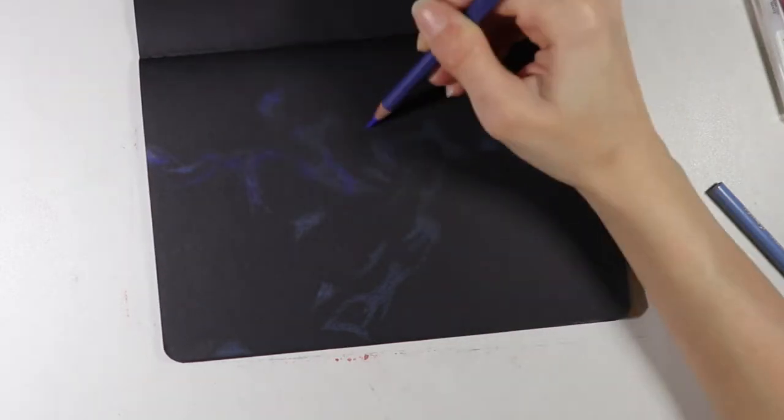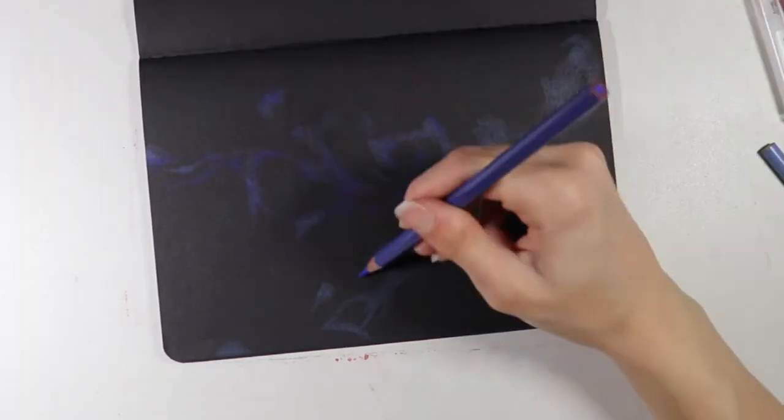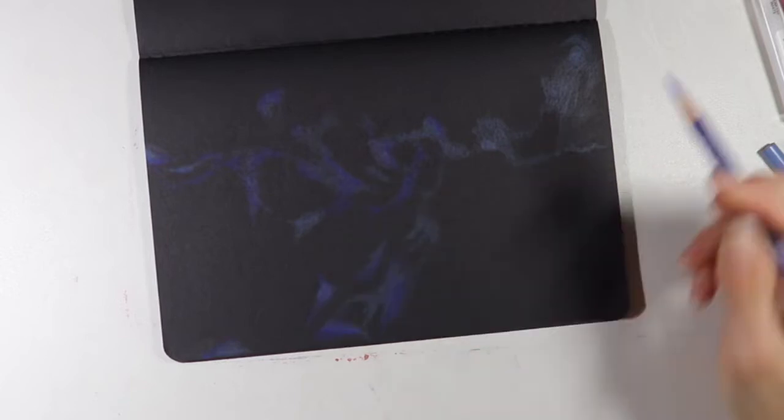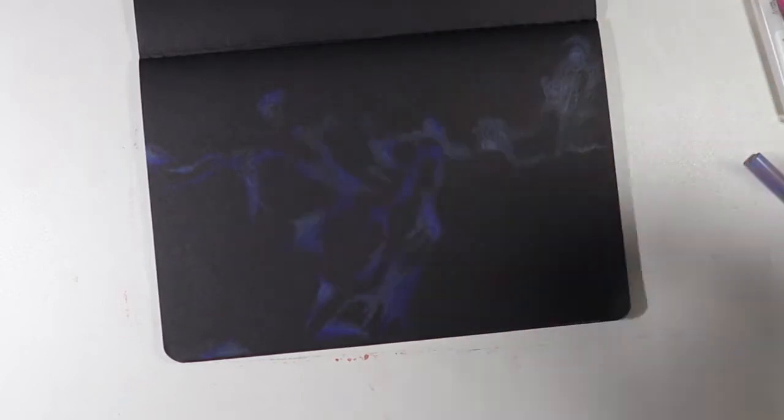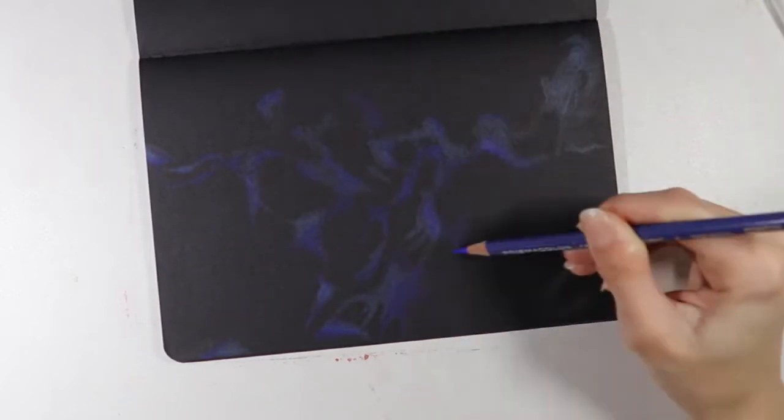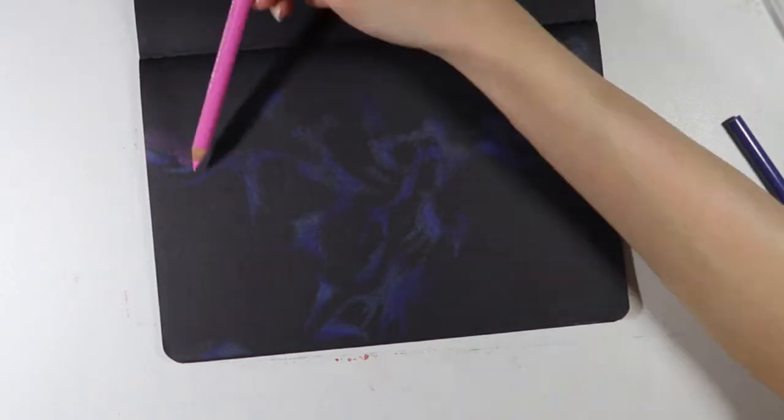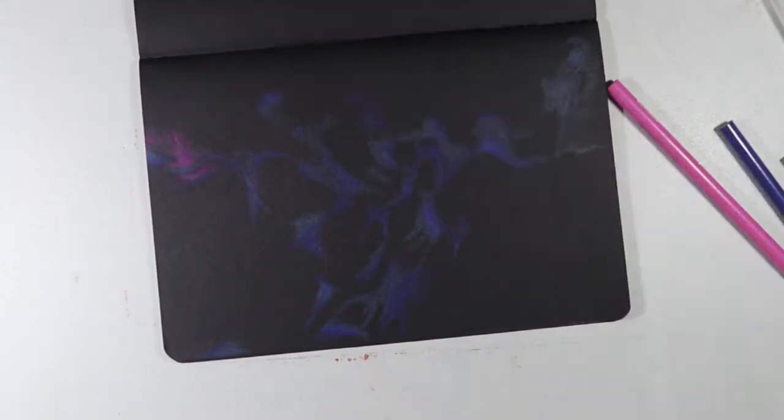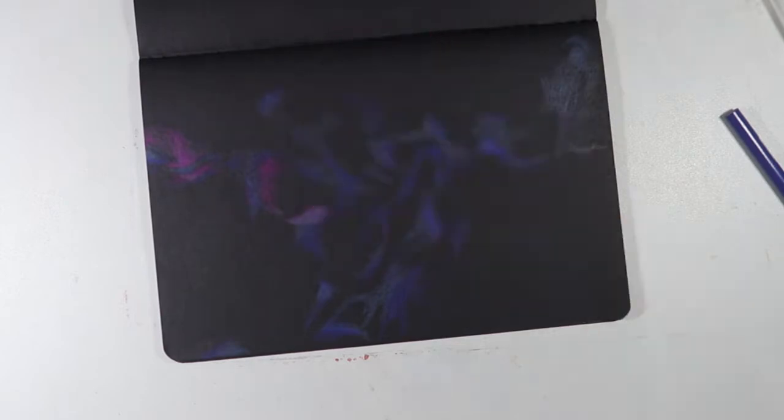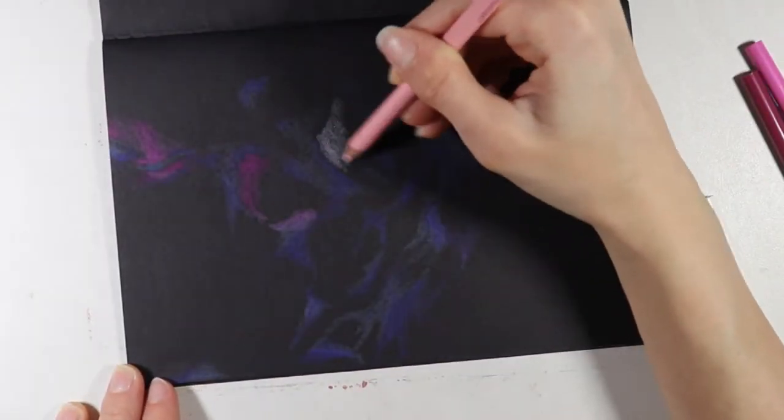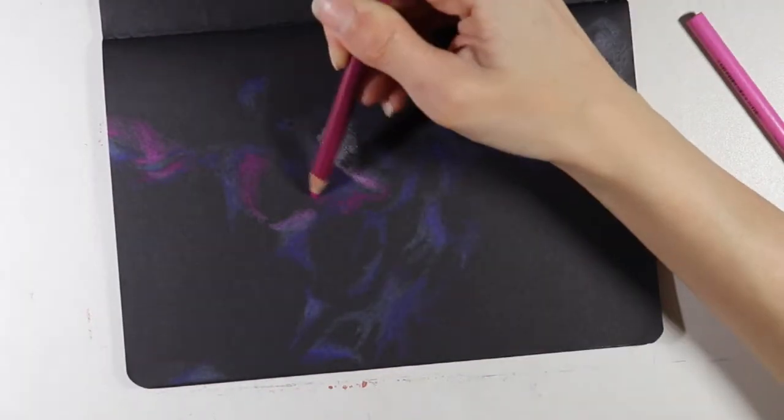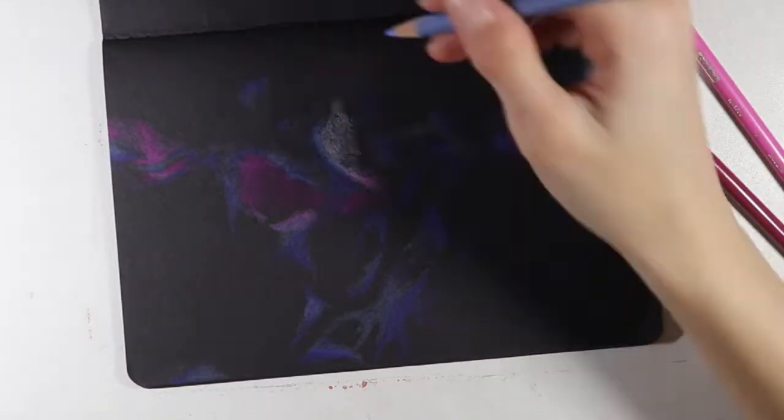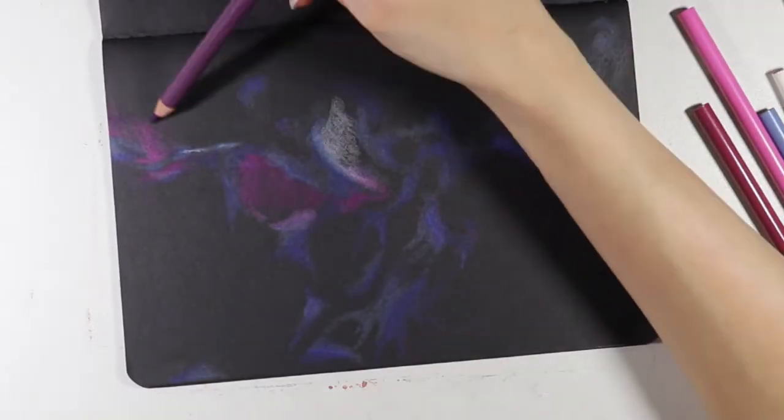And then I went in with my darker blue violet or purple color and kind of just added some depth to some of those areas because there's a lot of depth and there are some areas that are super bright and other areas that aren't. And I went in with pink and filled in some of that negative space because a lot of the colors are blended together. So you can see the way that I'm blending the pink and the violet and the blue violet together.